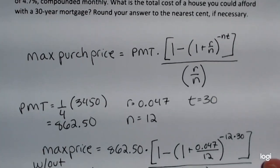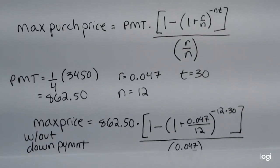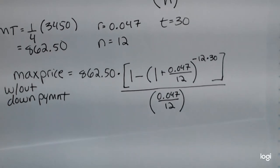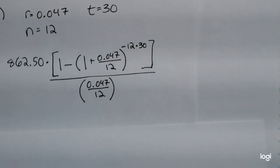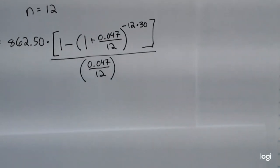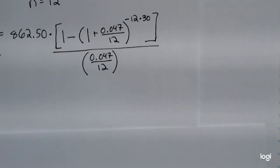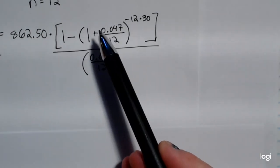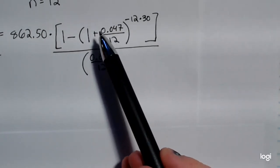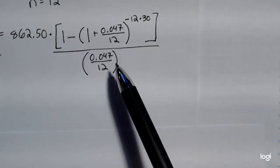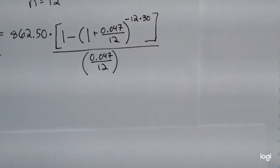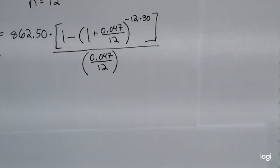Putting all of this into the formula, the max price without the down payment has a lot going on in the calculator. You're welcome to work a problem like this in pieces, but you want to be careful about rounding between steps, and you definitely want to work from the inside out — do the inner parentheses expression first, then raise it to the power, subtract it from one, and divide by the denominator expression. It's easier to enter it all in one step as long as you pay attention to your parentheses.